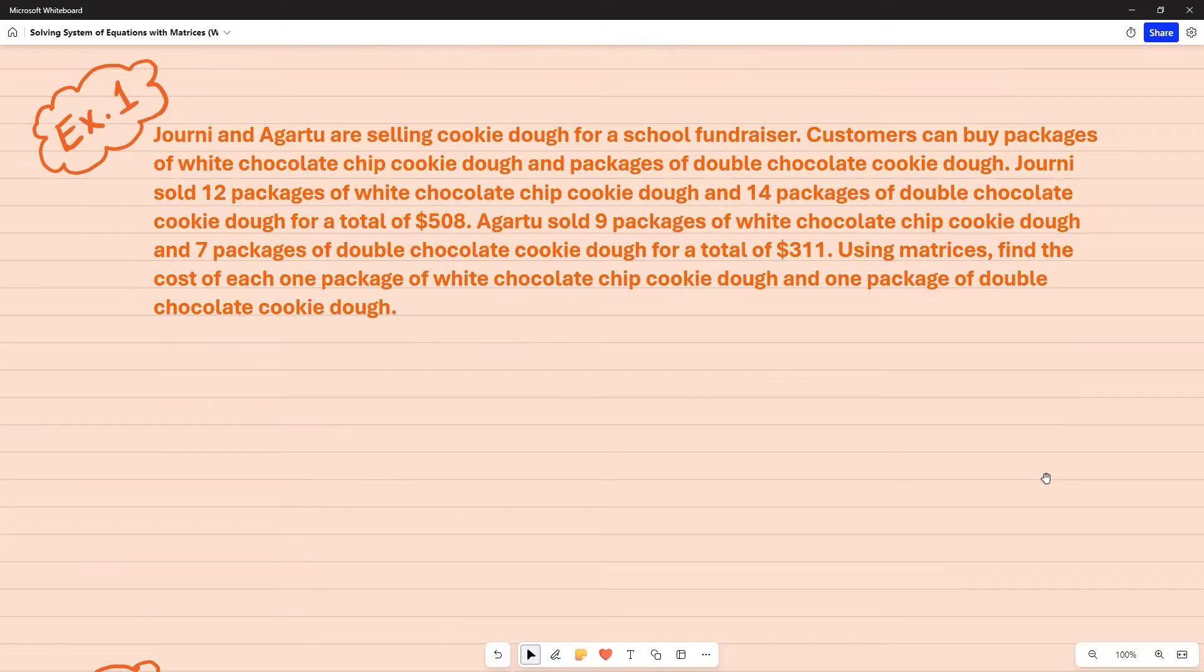For example one, Journey and Agartu are selling cookie dough for a school fundraiser. Customers can buy packages of white chocolate chip cookie dough and packages of double chocolate cookie dough. Journey sold 12 packages of white chocolate chip cookie dough and 14 packages of double chocolate cookie dough for a total of $508.